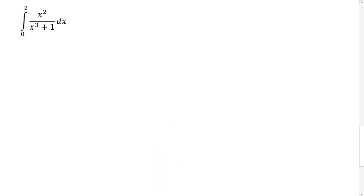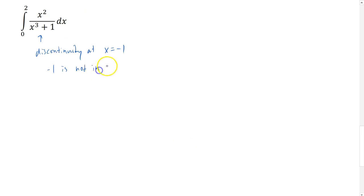Let's try one final example: another definite integral, from 0 to 2, integrating x squared over x cubed plus 1. This is a rational expression, so you want to check for discontinuities — there is a discontinuity at negative 1, but that's not in the interval from 0 to 2, so we're okay. There's no good way to simplify x squared over x cubed plus 1, so we'll think about a substitution.